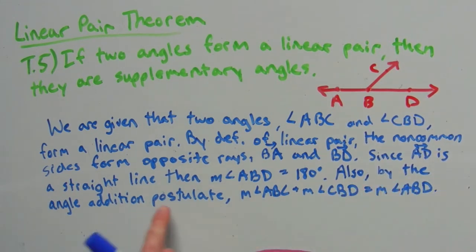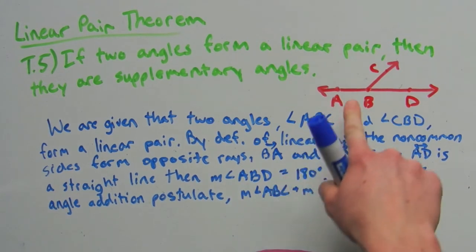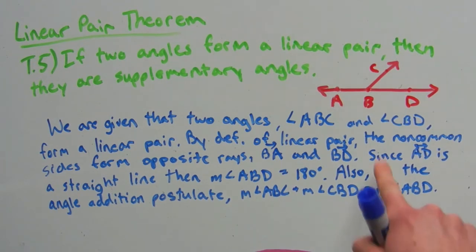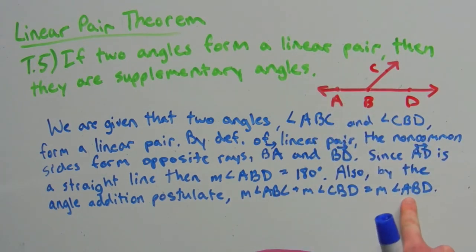So also, by the angle addition postulate, the measure of angle ABC plus the measure of angle CBD equals the measure of the angle formed by the straight line ABD.